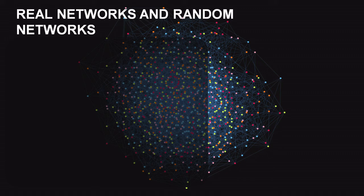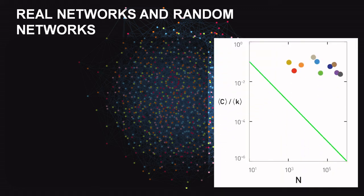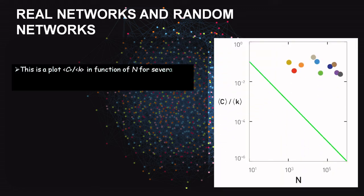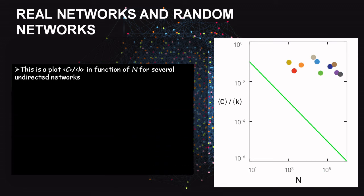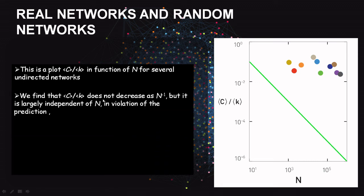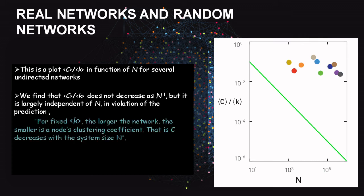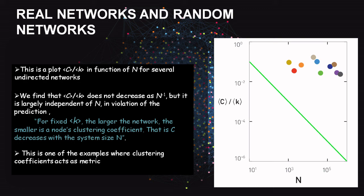Using clustering coefficient as a metric, we compare real networks and random networks. The plot shows C/k̄ against the number of nodes n for several real networks such as web and social networking models. The trend shows that C/k̄ does not decrease as n increases — it is largely independent of n. This violates the first prediction that C decreases with system size, indicating real networks are not random networks.